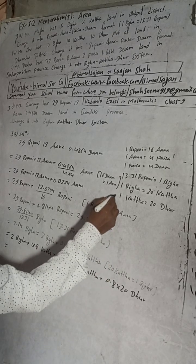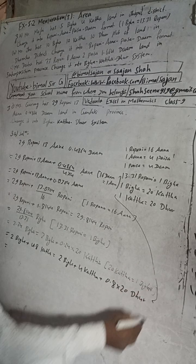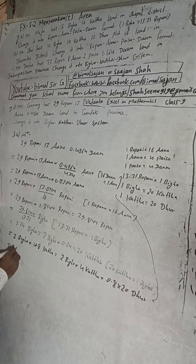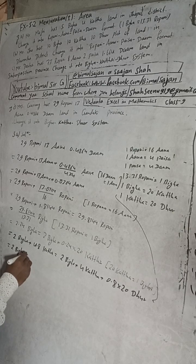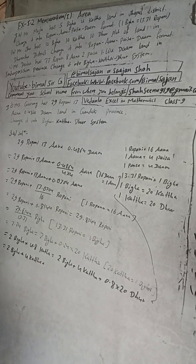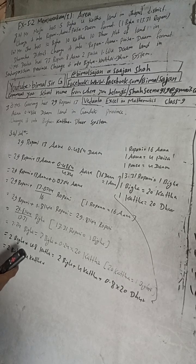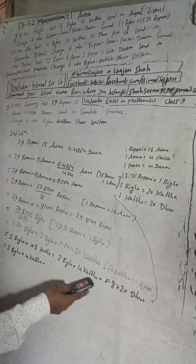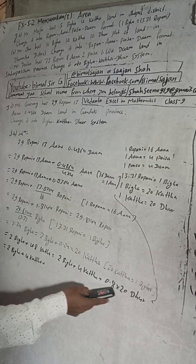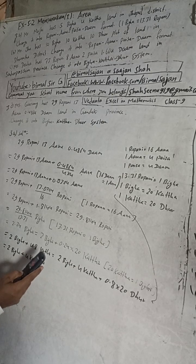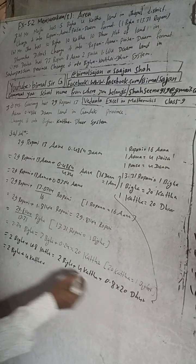Now this is here 2 bigaya plus 4 Katha. So 0.8 into 20, I got here 0.8. Now multiply the 20, I'll get here 16. So this is equal to 16 Dhur.